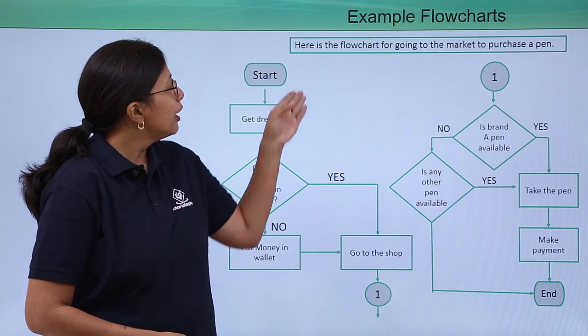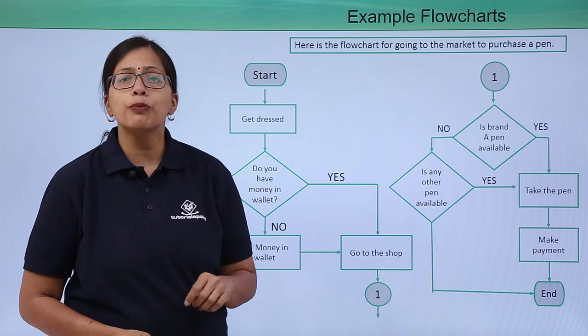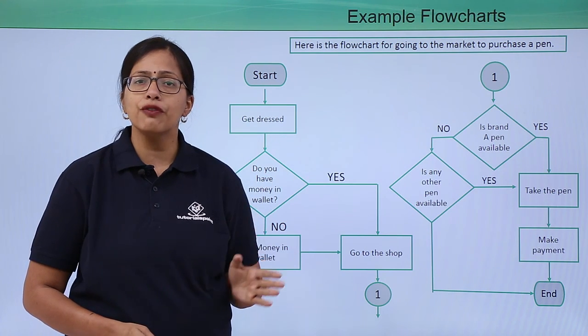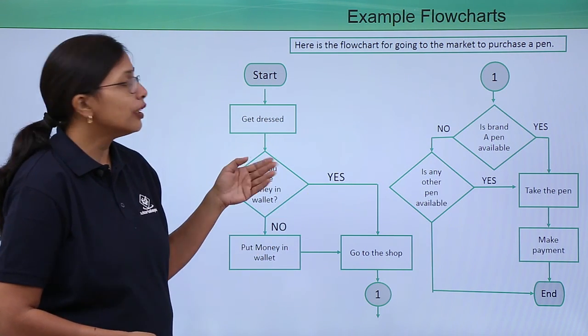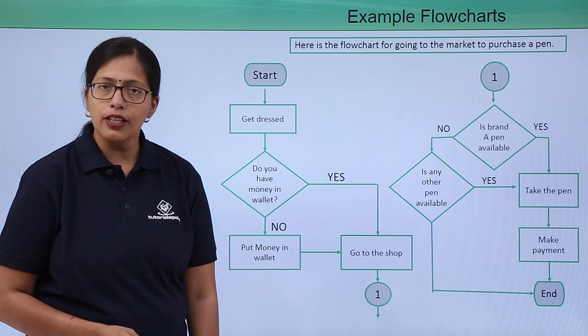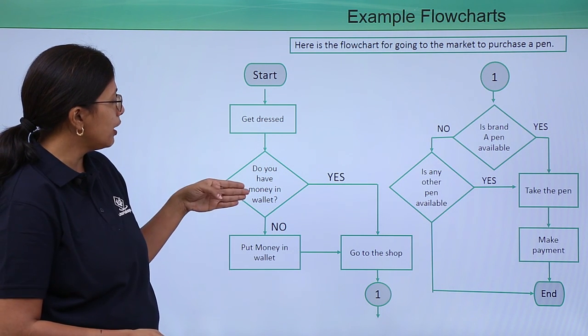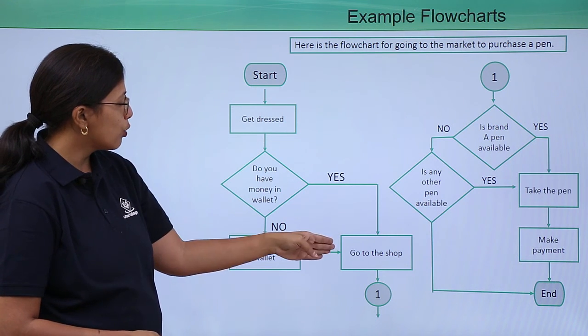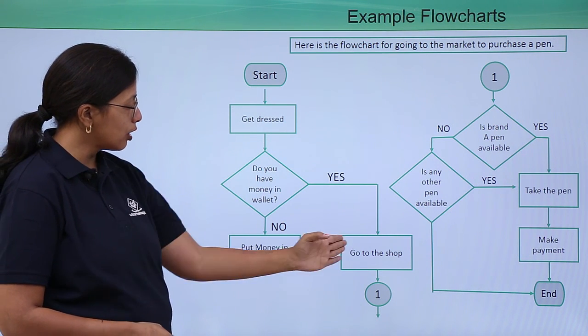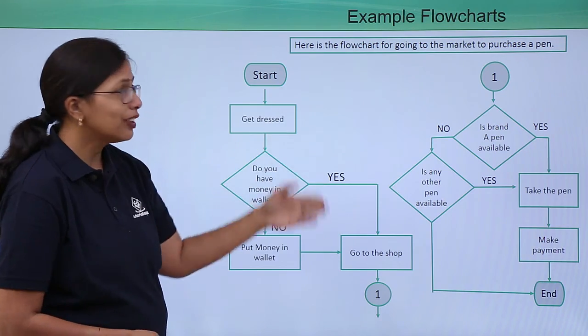Let's take an example. Here is the flowchart for going to market to purchase a pen. In our previous video we had written an algorithm for creating this flowchart. So you can see here: start, get dressed, do you have money in your wallet? Yes, go to the shop. No, put money in the wallet, go to the shop. After that...